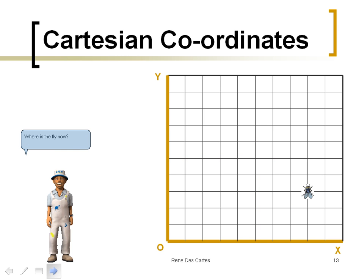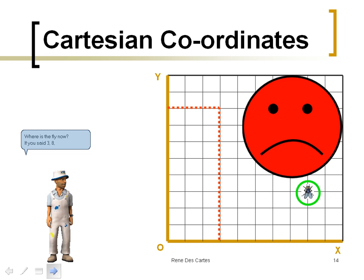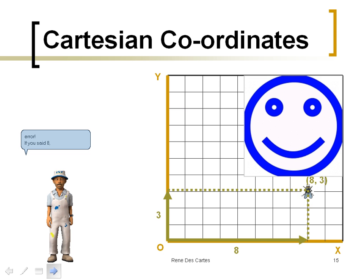Where is the fly now? If you said (3, 8), you are in error. If you said (8, 3), you are correct.